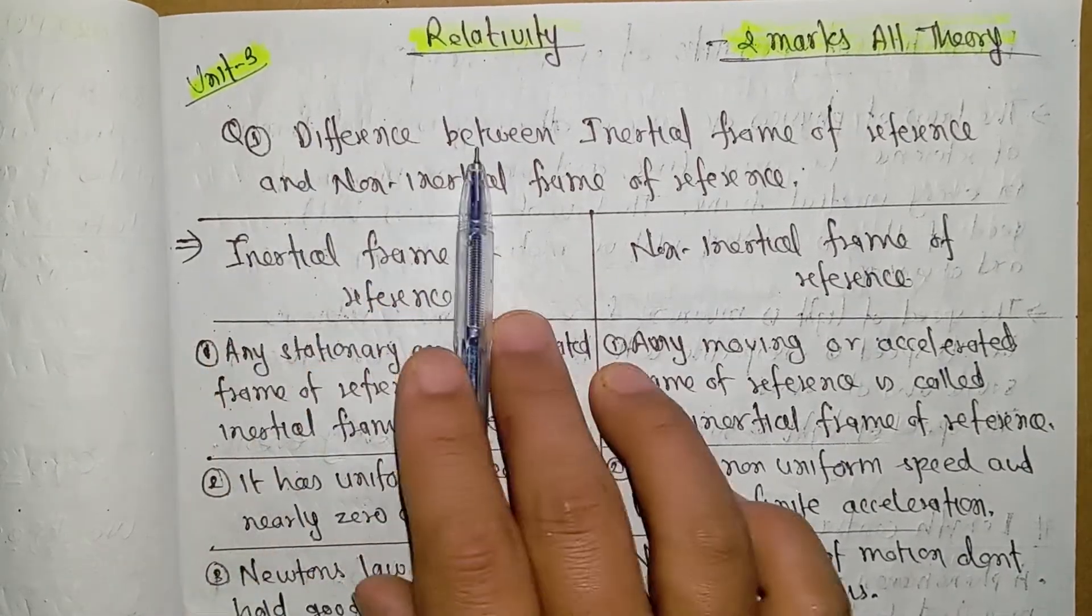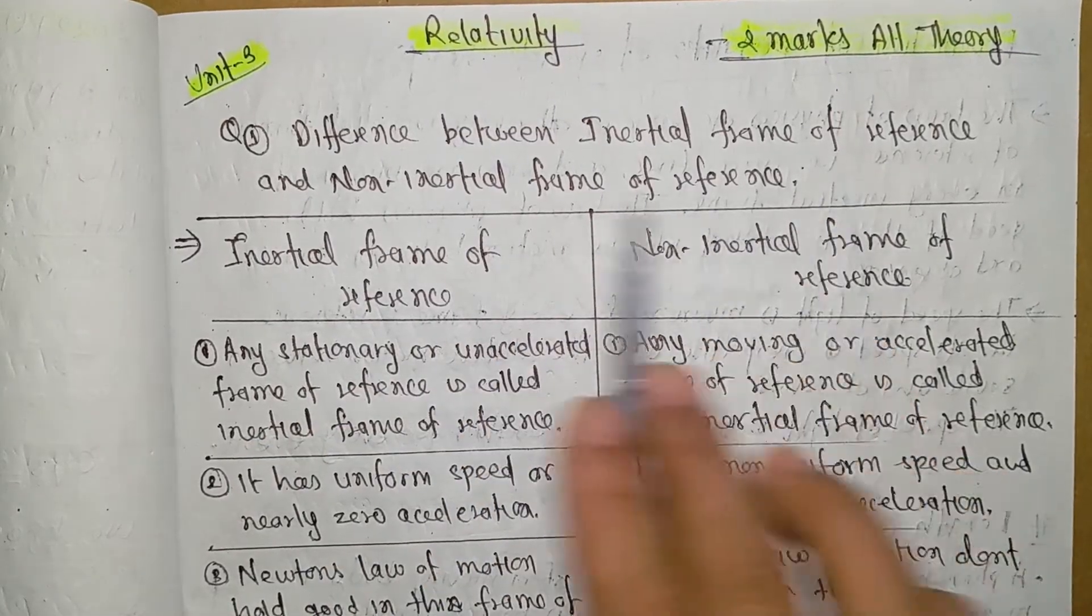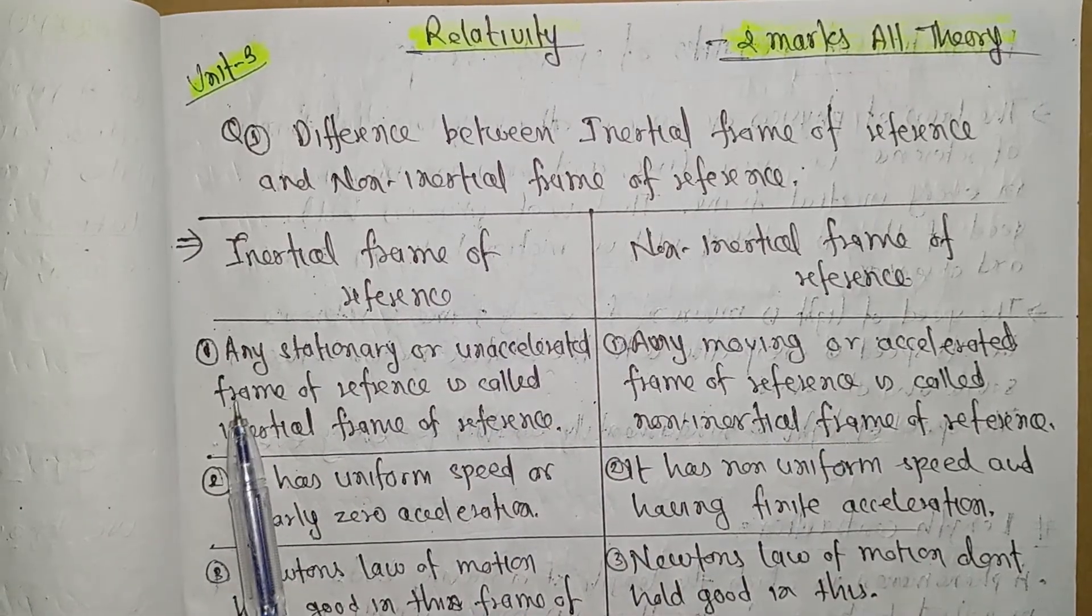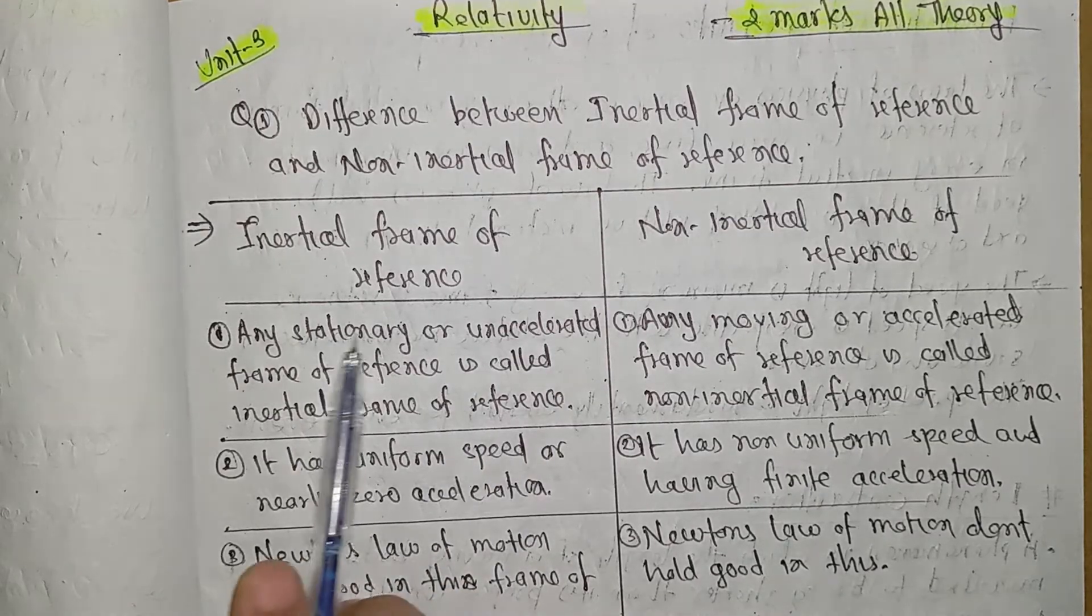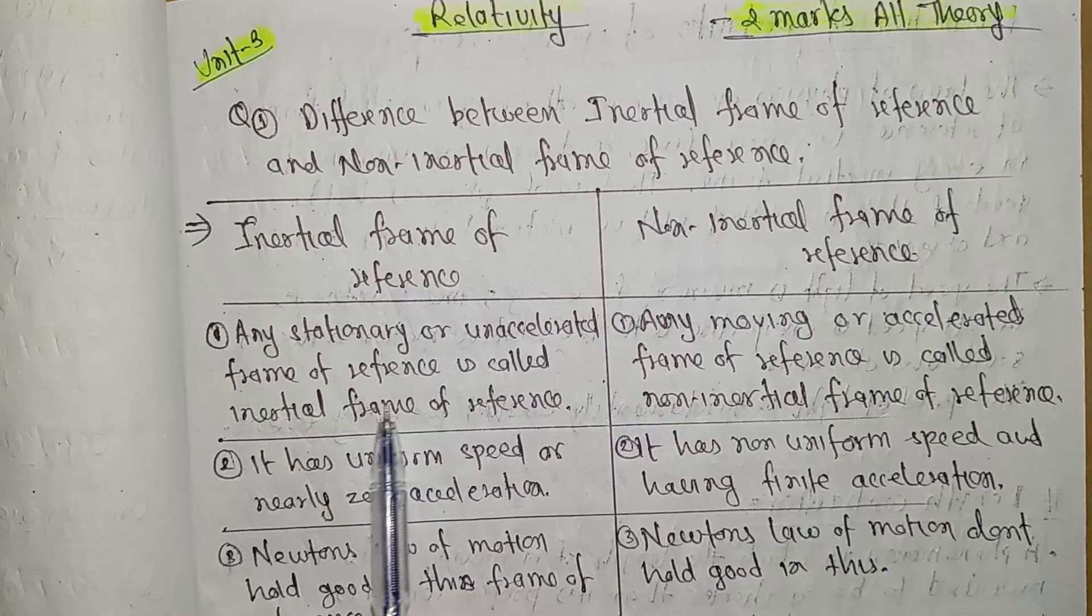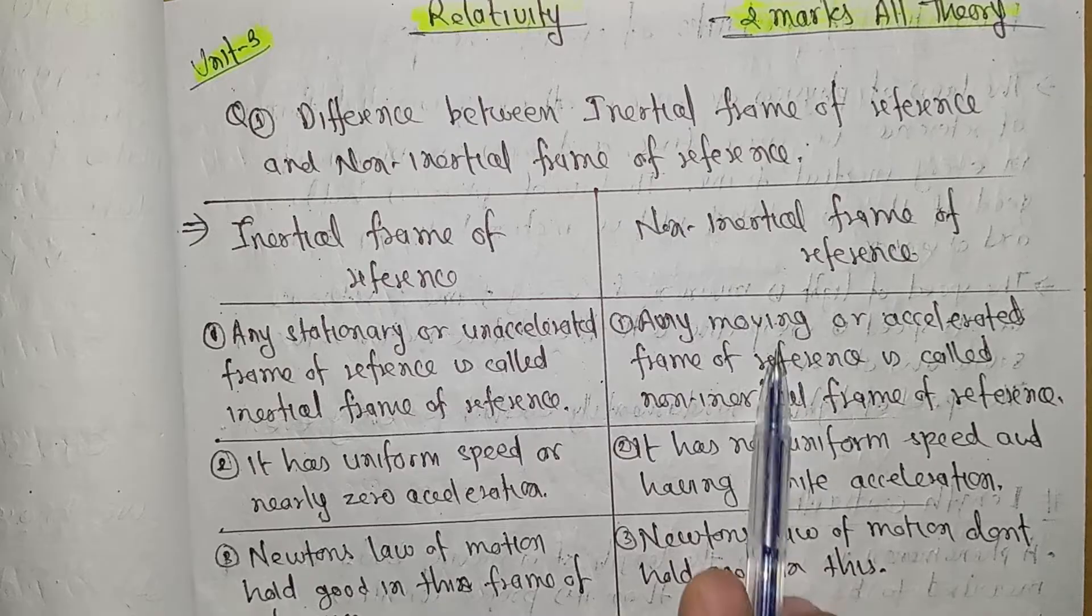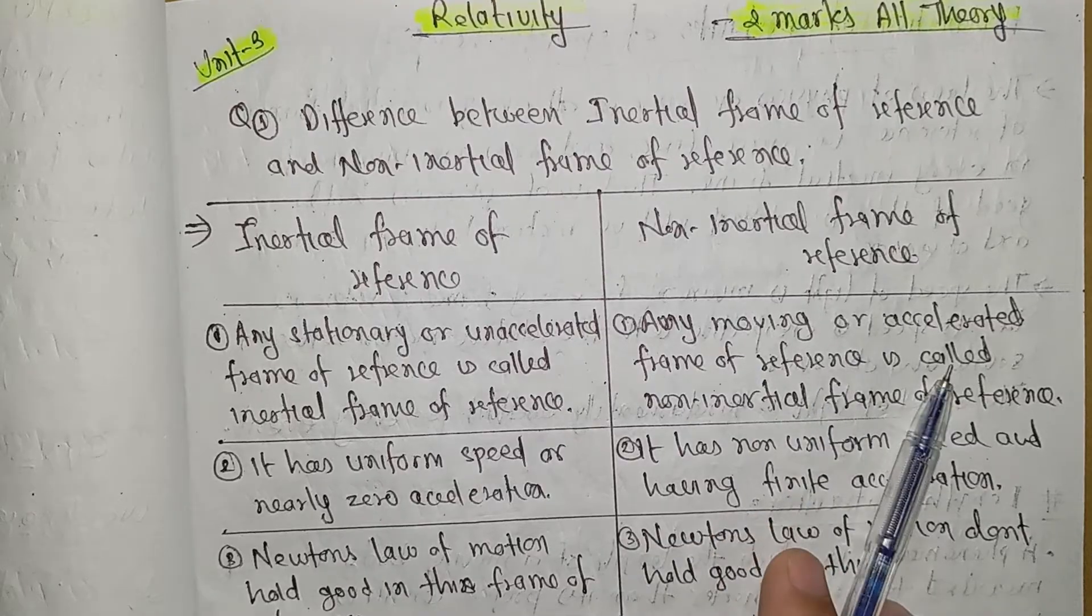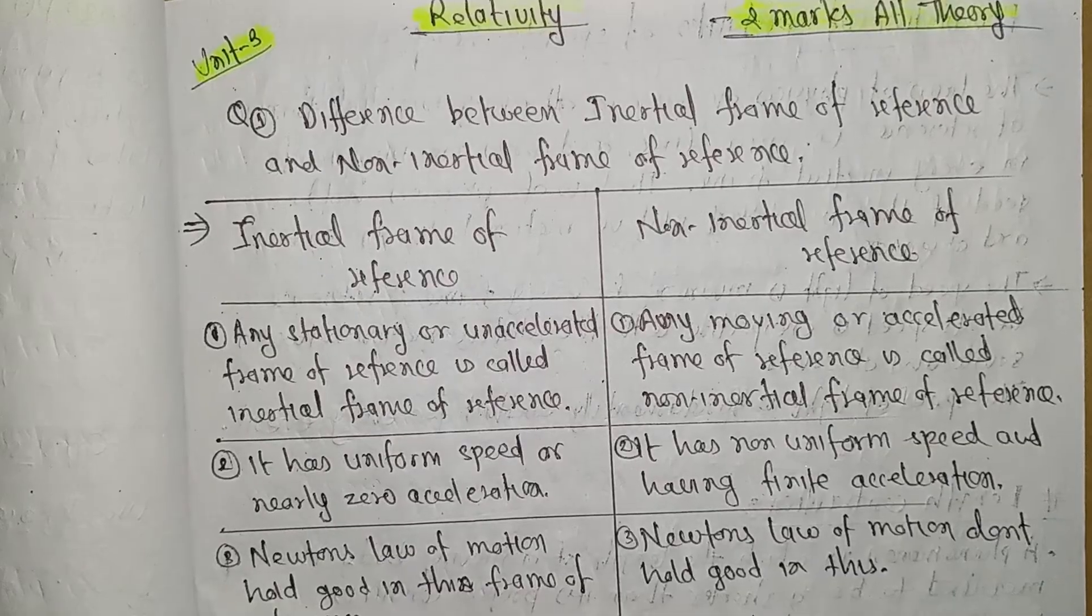First, let's discuss the difference between inertial frame of reference and non-inertial frame of reference. This is a very important concept. An inertial frame of reference is a stationary or unaccelerated frame of reference. A non-inertial frame of reference is a moving or accelerated frame of reference.